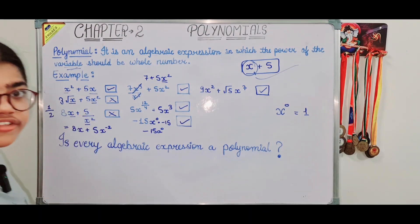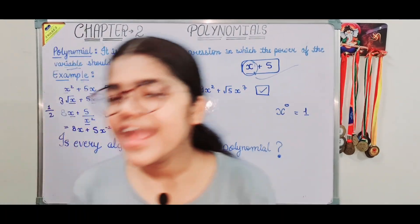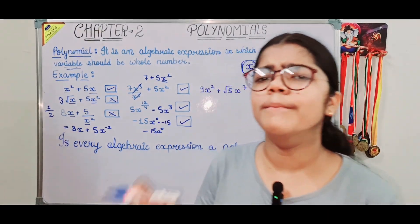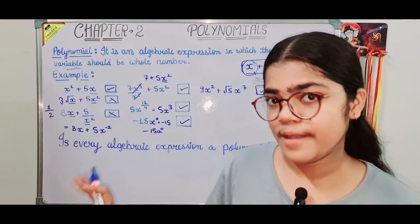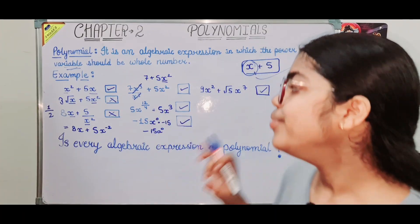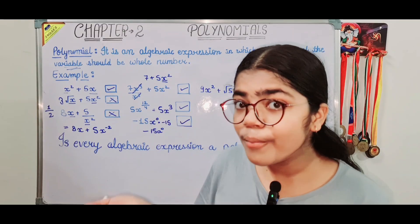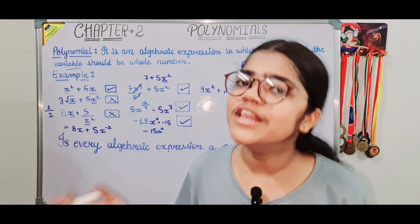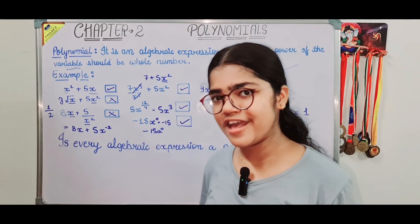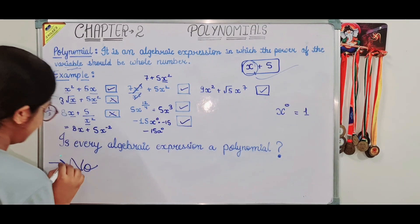So to summarize: all polynomials are algebraic expressions, but not all algebraic expressions are polynomials. For an algebraic expression to be a polynomial, the power of the variable must be a whole number — not negative, not a decimal or fraction.